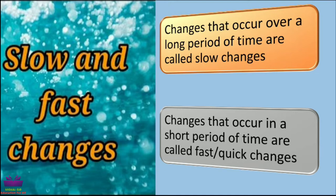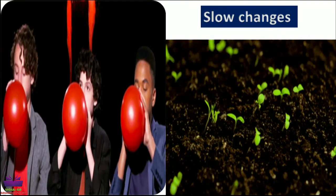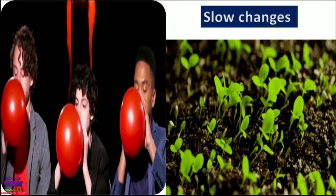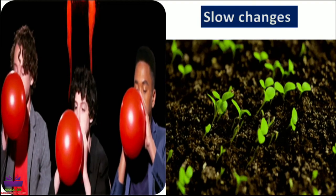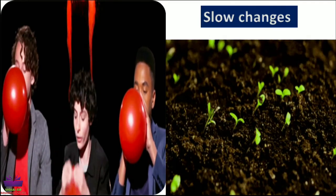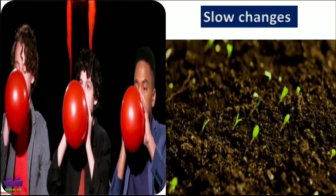Next: slow and fast changes. Changes that occur over a long period of time are called slow changes — they take a little longer time to happen. Whereas, changes that occur in a short period of time are called fast or quick changes. Examples of slow changes include blowing a balloon, and the germination of seeds growing into seedlings, which also takes a pretty long time — so germination of seeds is an example of slow change.